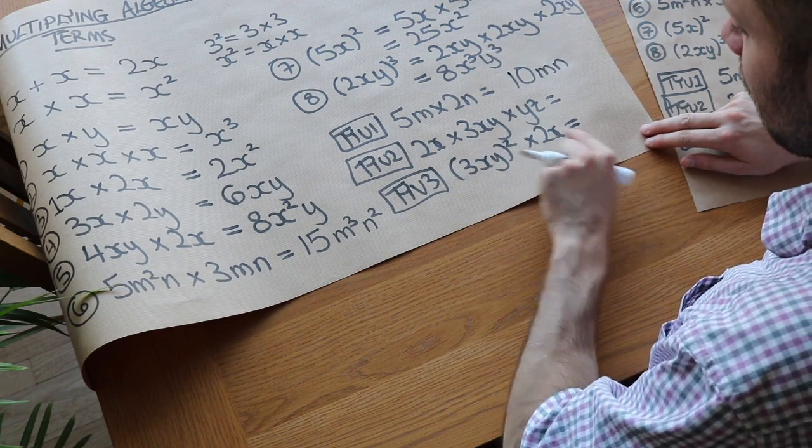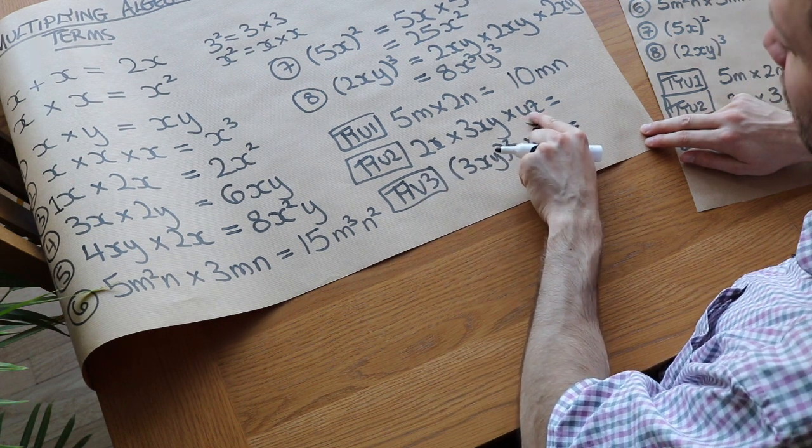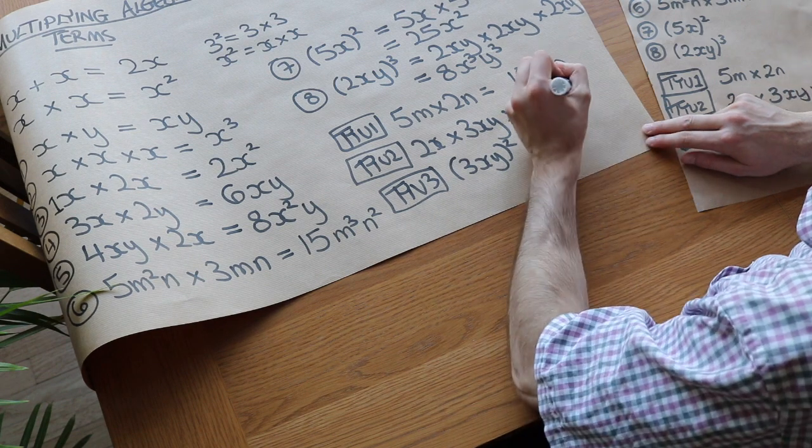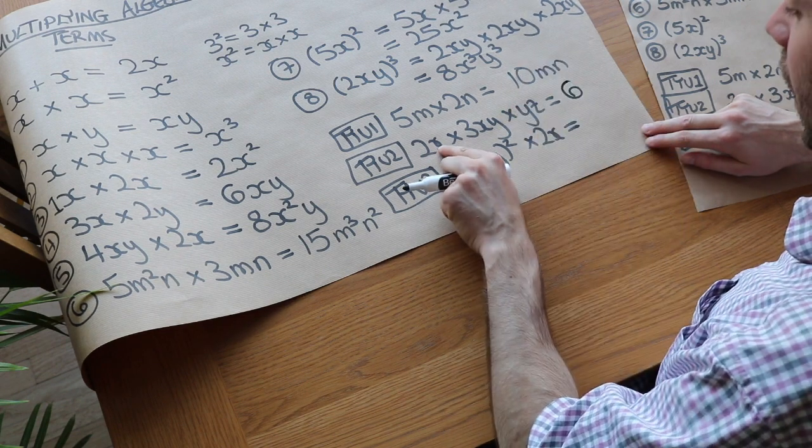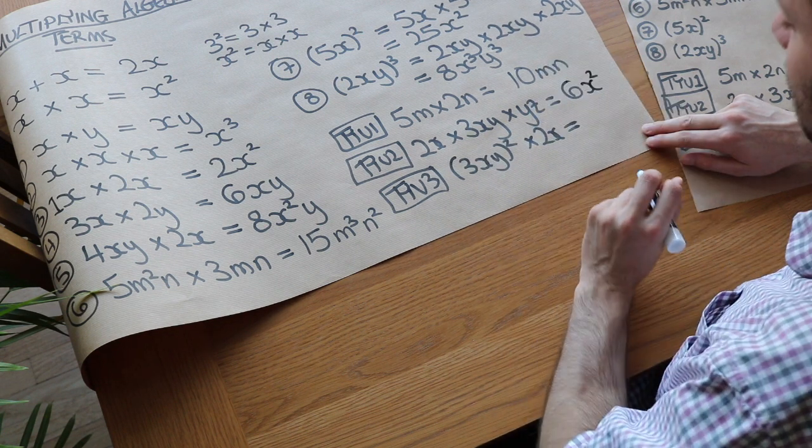This one. Let's multiply the numbers first together. We've got 2 times 3. And that's implicitly a 1 on the front. 1yz just means 1 lot of yz. So we've got 2 times 3 times 1, which is just 6. We've got x times x. And there's no x there. So that's x squared because we had 2 x's multiplied together.